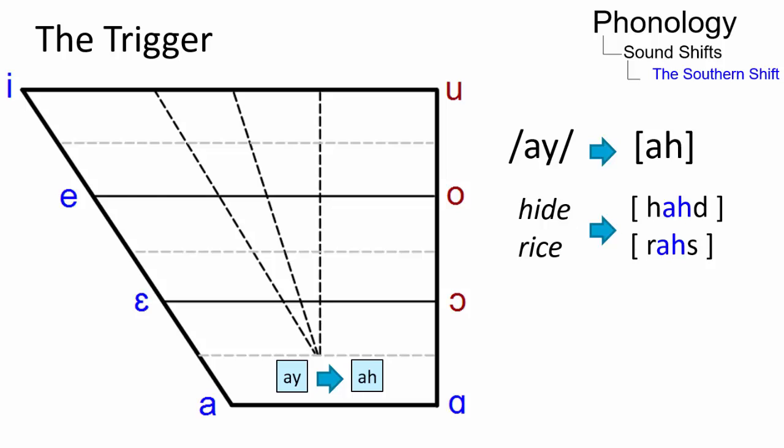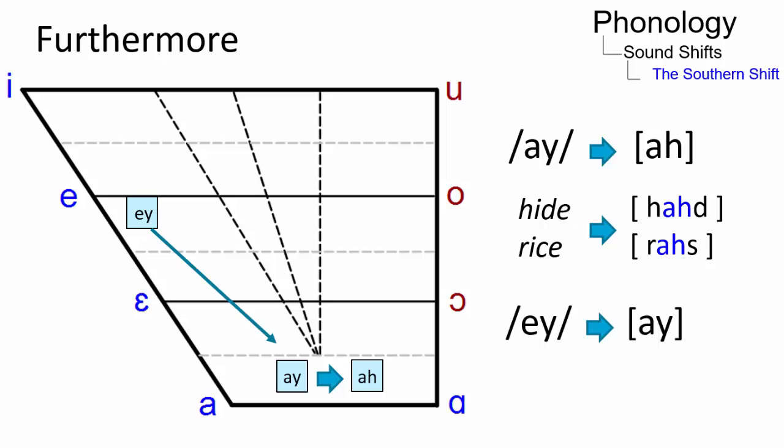Furthermore, the onset of the mid-front vowel /ey/ is lowered and centralized to /ay/, so that slate sounds more like slide.